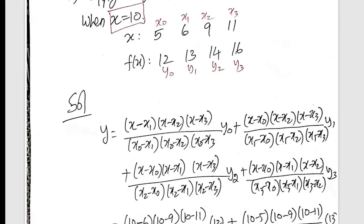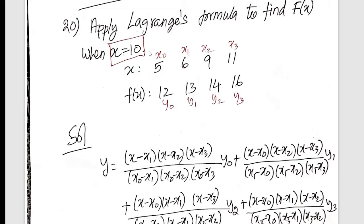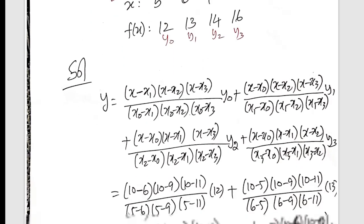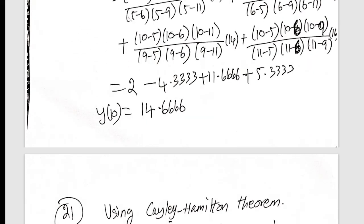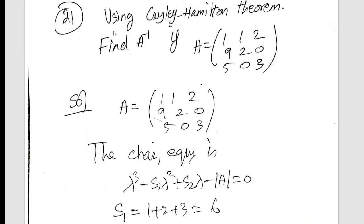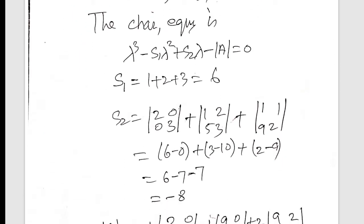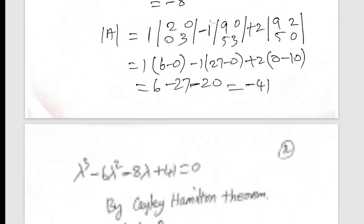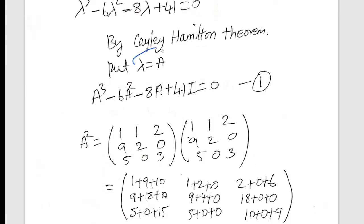Lagrange's — this is the problem in the last class video. This is the April 2021 question paper. Lagrange's x, y — so the problem is just to check. Using Cayley-Hamilton, find A inverse. So this is to verify Cayley-Hamilton. A inverse is the same. So this is the return value of Cayley-Hamilton. A inverse is the same; we cannot exchange in Cayley-Hamilton. So that will be the answer, using Cayley-Hamilton.